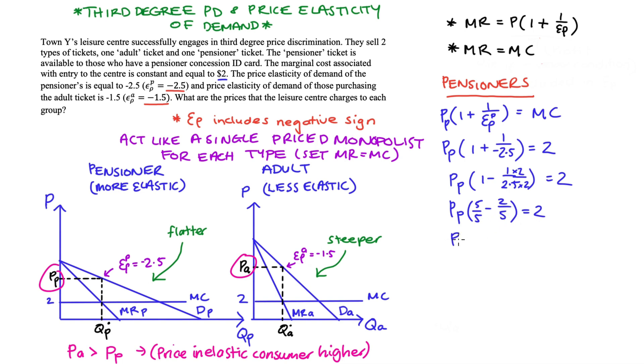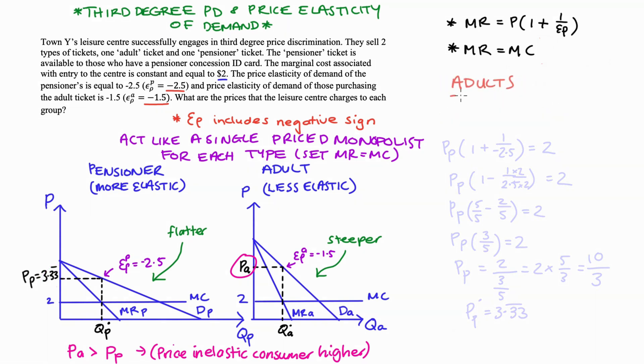Then we have two fractions with the same denominator. We take the difference between the numerators, which is three, and we leave the denominator as is. So we get that price variable times three over five is equal to two. Solving for that price variable, we divide two by three over five, which is just to multiply two by five over three. So we get 10 over three, which is 3.33. And that's our pensioner's price.